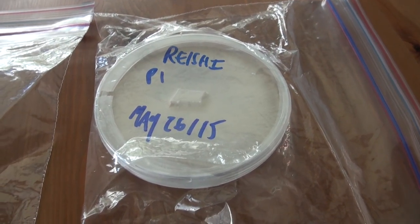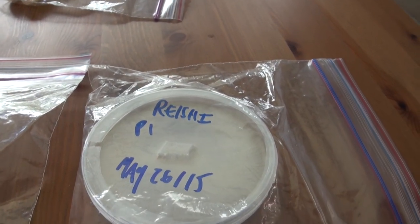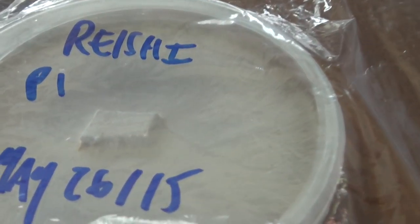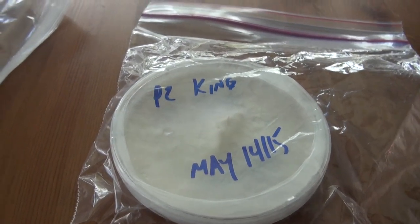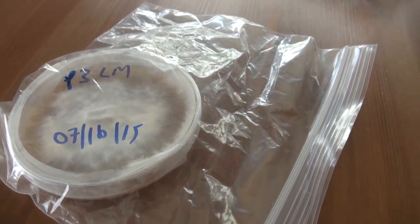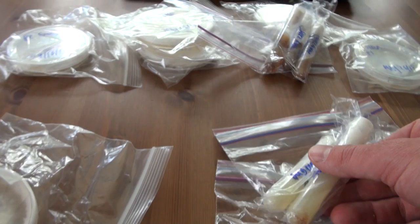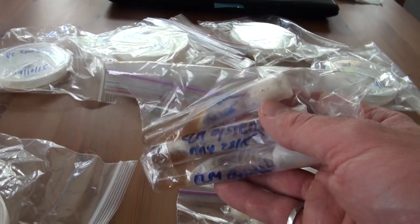Here are a couple of the original cultures that I'm going to be transferring to new dishes. This is a reishi mycelium. We've got some king oysters, some lion's mane, and we also have some yellow oyster and elm oyster saved on culture slants.